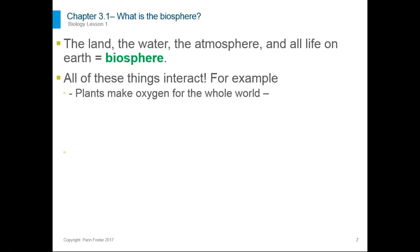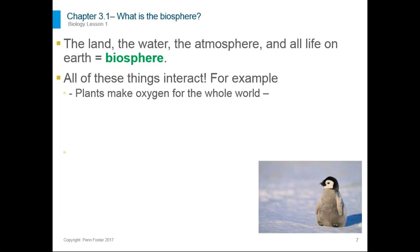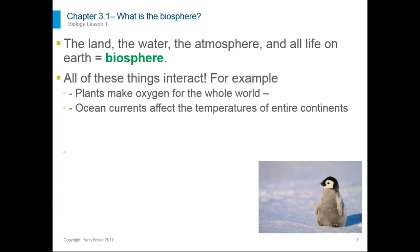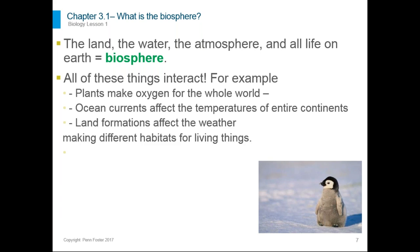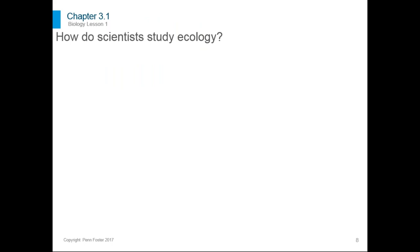For example, plants make oxygen for the whole world — even where there are no plants, there is oxygen to breathe. There are no plants in Antarctica in winter, but emperor penguins still have plenty of oxygen. Ocean currents affect the temperatures of entire continents, affecting what organisms can live there. Land formations such as mountains affect the weather and water, making different habitats for different living things. How do scientists study ecology? There are three different basic methods.